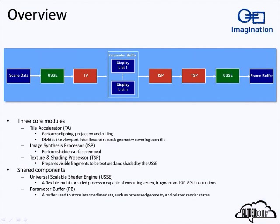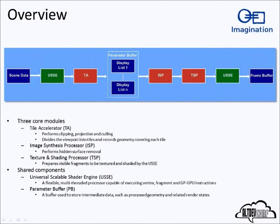We have three main modules. The TA, or tiling accelerator, does the geometry processing and pushes all geometry into the appropriate tile for fragment processing later — it also creates the intermediate parameter buffer. Once the parameter buffer is made and all geometry is gathered, the image synthesis processor, or ISP, does the magical hidden surface removal — the clever deferred bit — and then pushes remaining fragments into the texture and shading processor, or TSP, which sets up the actual fragment processing jobs.